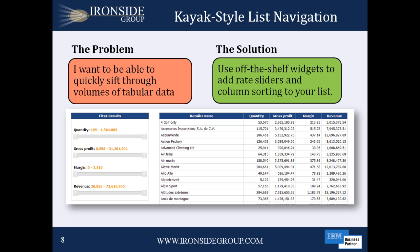We will now move on to our first example. There are some occasions when a simple list is the best way to display a dataset, but you still want to be able to identify a few specific rows without having to rely on predefined filters or conditional formatting. To solve the problem, we have used an off-the-shelf UI widget as the basis for a Kayak.com style rate slider plugin. The result is a highly interactive, sortable list that was implemented without the report author having to know any JavaScript.